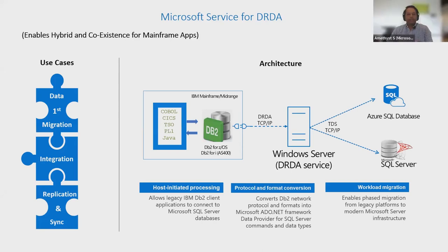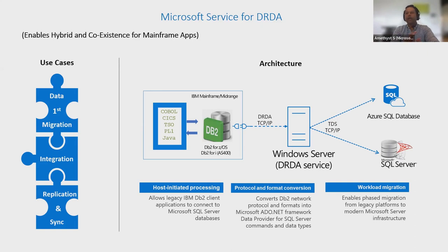My name is Amethyst Solomon, and I'm here to be presenting some of the technical details that Ashish mentioned earlier. I'd like to start with the first thing pointed out by Mukesh: Microsoft provides a multitude of products that can cover the end-to-end migration space. For this particular demonstration, we are going to look at the DRDA service, which is a part of Host Integration Server. Host Integration Server consists of a bunch of different products that we have today for connecting to DB2, connecting messaging queues, and other variations of mainframe-related connections, including TN3270.